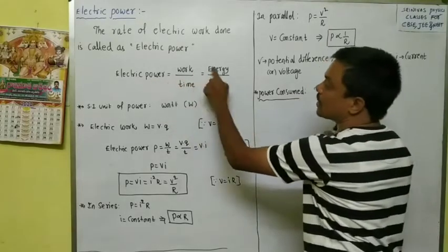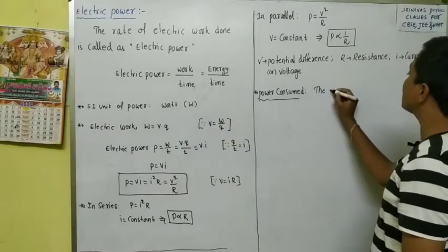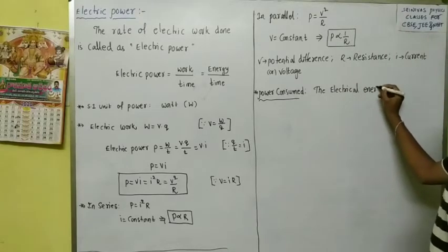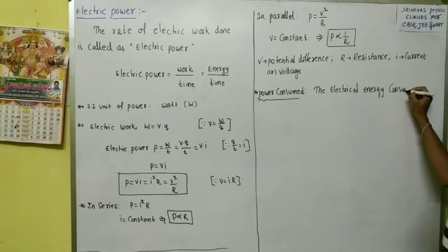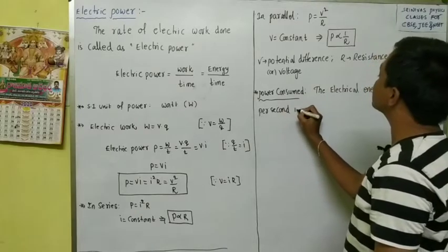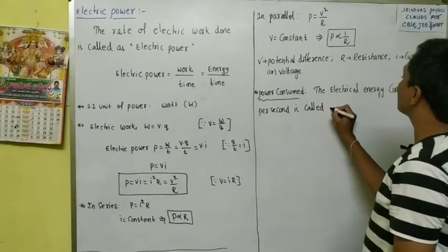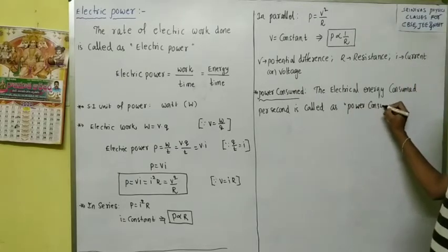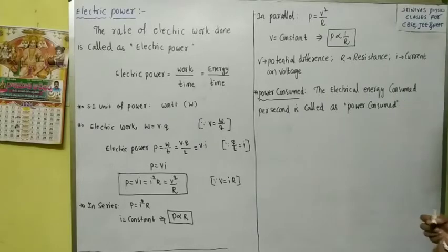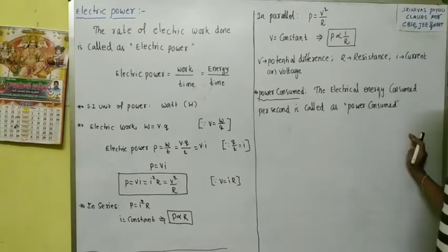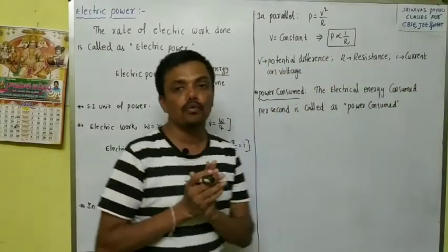Power consumed equals energy consumed by time. The electrical energy consumed per second is called as power consumed. In one second, how much electrical energy is consumed — that is called electric power consumed. Power consumed means energy consumed per second.